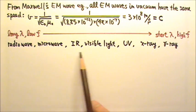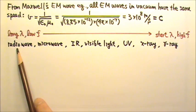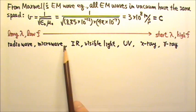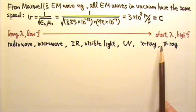There are many types of EM waves. From the longest wavelengths, we have radio wave, microwave, infrared, visible light, ultraviolet, X-rays, and gamma rays.